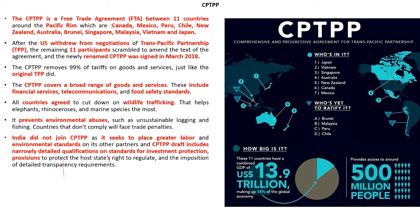CPTPP removed 99 percent of tariffs on goods and services, just as the original TPP did. It covers a broad range of goods and services including financial services, telecommunication, and food safety standards. All countries have also agreed to cut down wildlife trafficking — protecting animals such as elephants, rhinoceros, and marine species — and to prevent environmental abuse such as unsustainable logging and fishing. Countries that do not comply will face trade penalties.